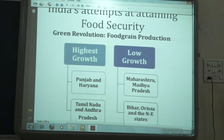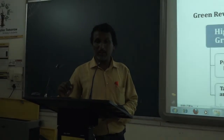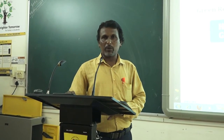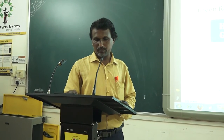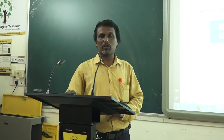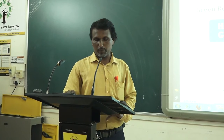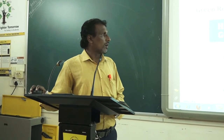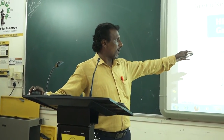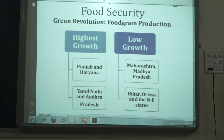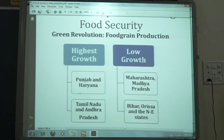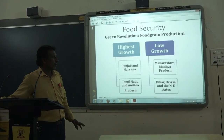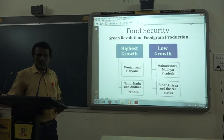Due to these measures, agricultural productivity increased significantly. It is reported that in 1964-65, wheat production was 7.23 million tons in Punjab and Haryana. After the introduction of the Green Revolution, it increased to 30.33 million tons in 1995-96. High growth rates were reported in Punjab, Haryana, Tamil Nadu, and Madhya Pradesh, while low growth rates were reported in Maharashtra, Bihar, Orissa, and Madhya Pradesh.